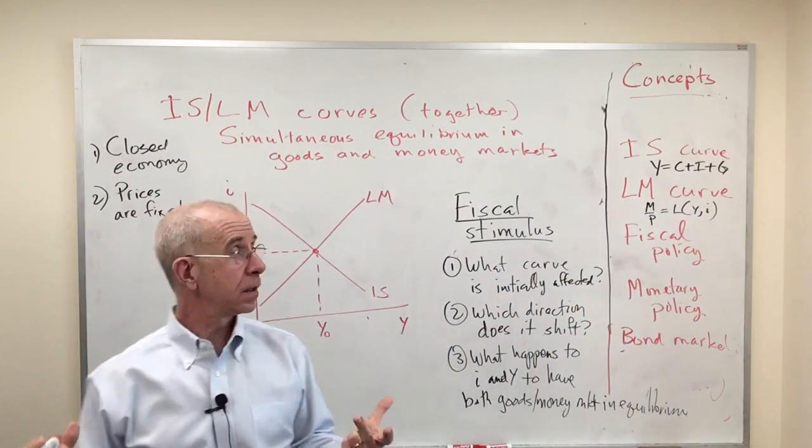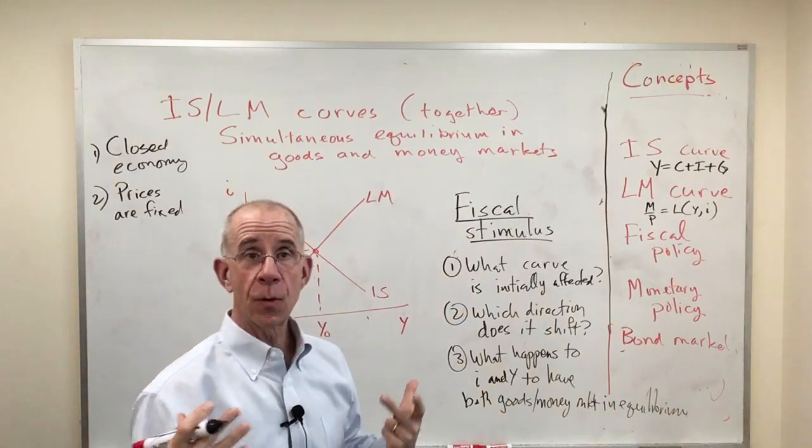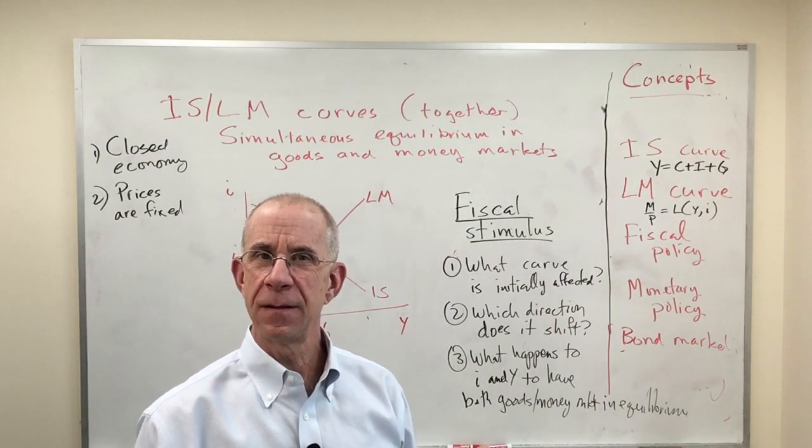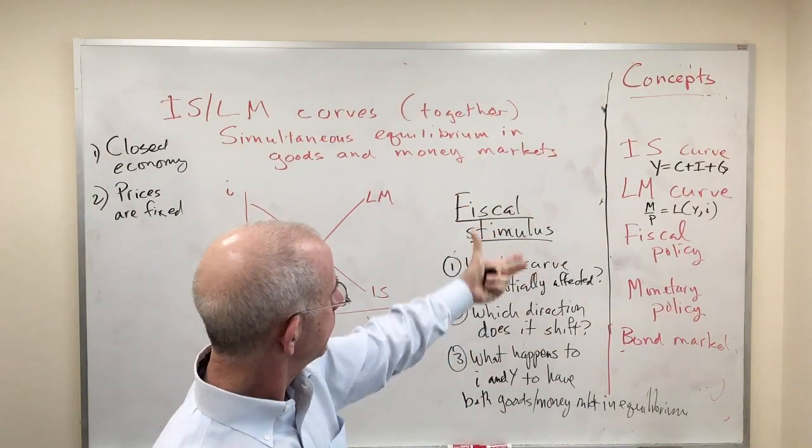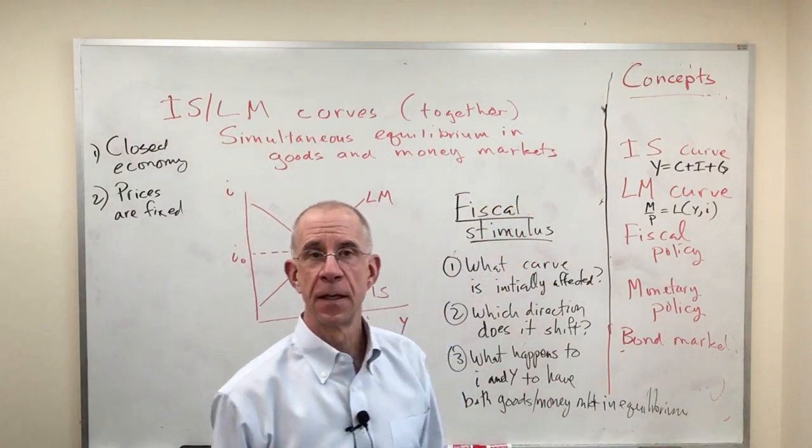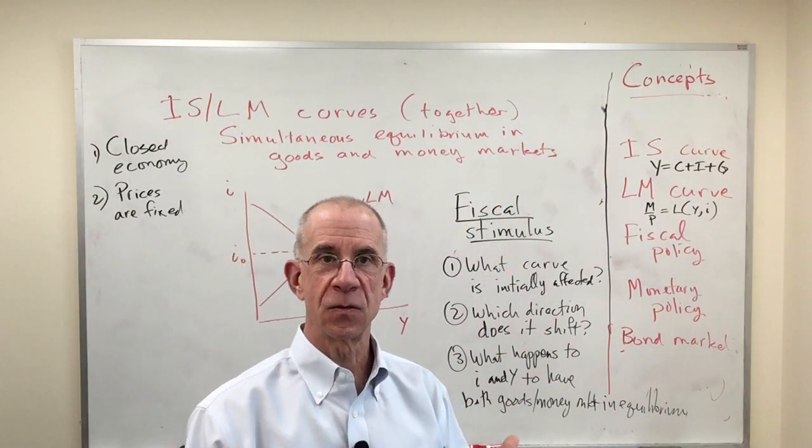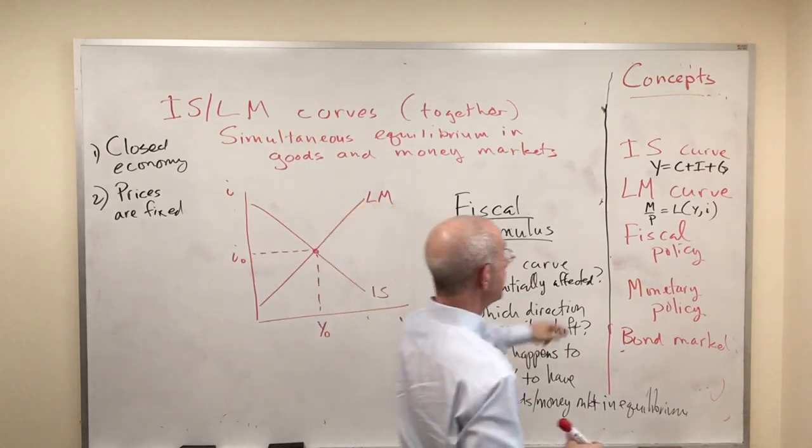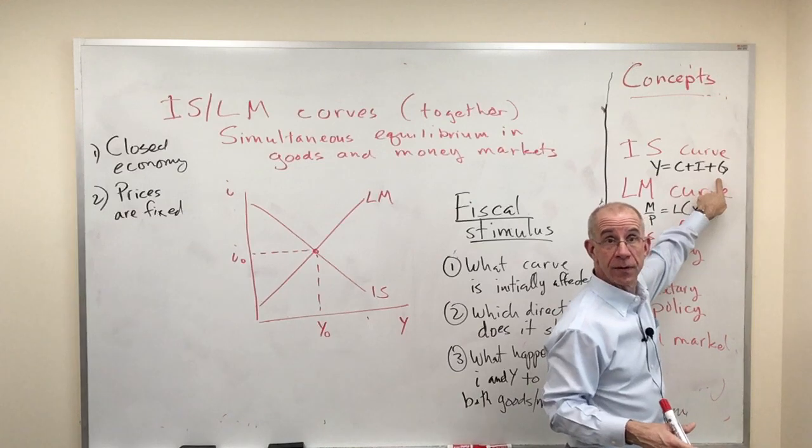So you ask yourself, if there's an increase in government spending, which of these two things is going to be affected? If there's a decrease in taxes, which of these two things are affected? Well, government spending clearly shows up in the IS curve here.